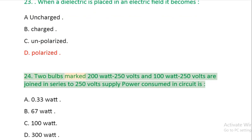Question 24: Two bulbs marked 200 watt 250 volts and 100 watt 250 volts are joined in series to 250 volts supply. Power consumed in circuit is: A: 0.33 Watt. B: 67 Watt. C: 100 Watt. D: 300 Watt.